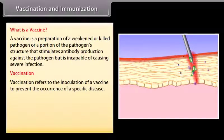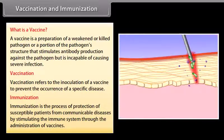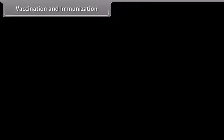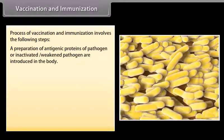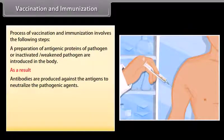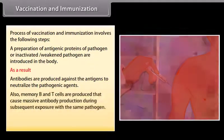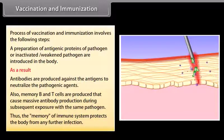Vaccination refers to the inoculation of a vaccine to prevent the occurrence of a specific disease. Immunization is the process of protection of susceptible patients from communicable diseases by stimulating the immune system through the administration of vaccines. This involves introducing antigenic proteins of a pathogen or an inactivated weakened pathogen into the body, causing antibodies to be produced against the antigens to neutralize pathogenic agents. Memory B and T cells are also produced, causing massive antibody production during subsequent exposure to the same pathogen, thus protecting the body from further infection.